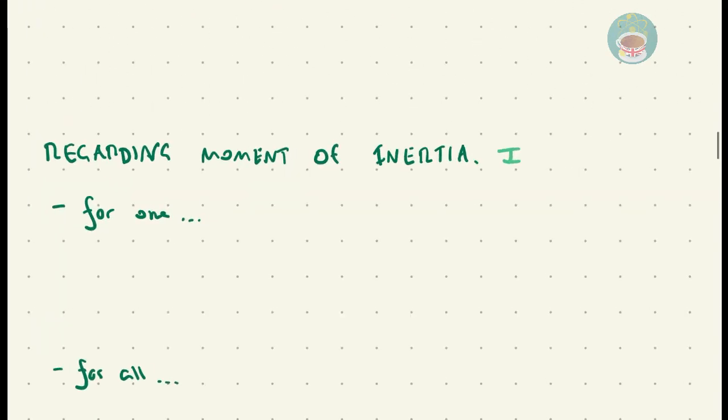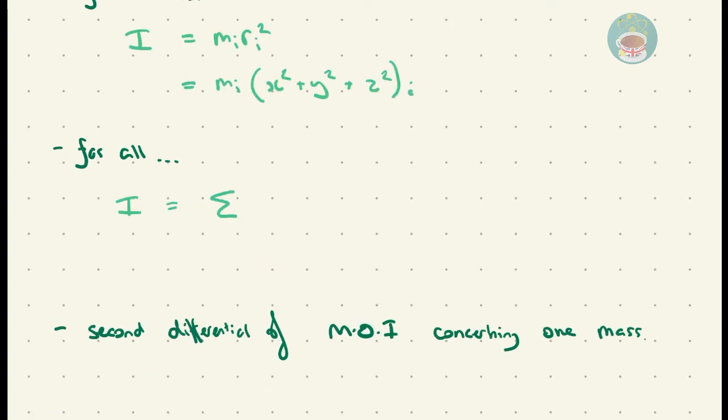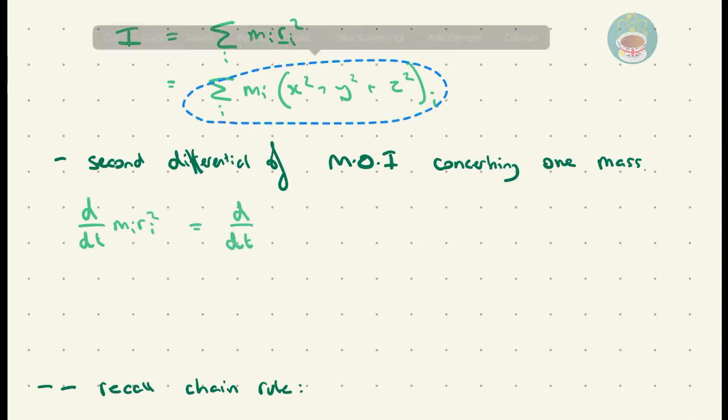Now we concern ourselves with the moment of inertia for a single particle, the equation for which is Mi Ri squared, which we rewrite as above. We perform the time differential of this equation, followed by the second time differential, which uses chain rule.